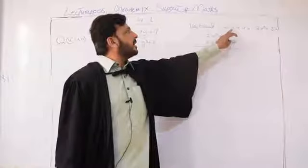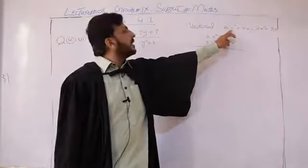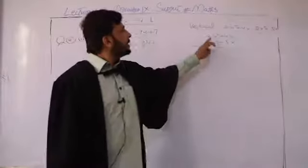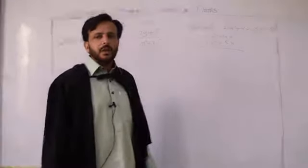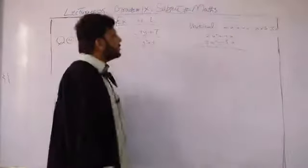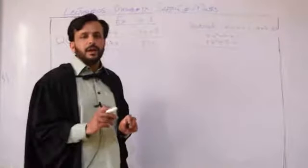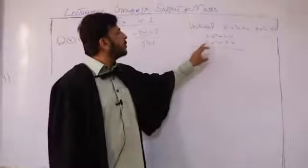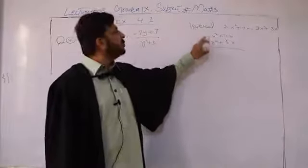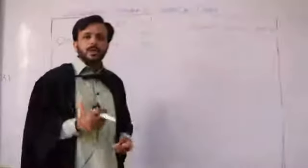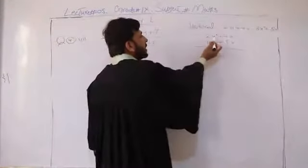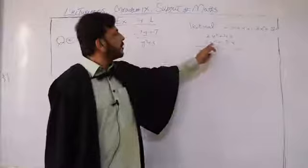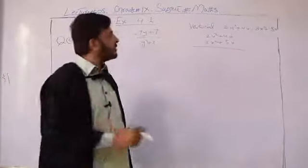In both expressions, you have the term of x square. In the vertical method, we write x square below x square. If there is no constant term, it goes this way. Now, we have to add the coefficients. We have 3 and 2 — both are x square, so they are like terms. The coefficient of the first x square is 2 and the coefficient of the second is 3. In addition, we only add the coefficients: 3 plus 2.